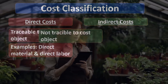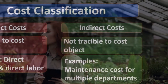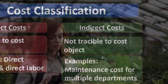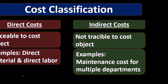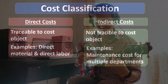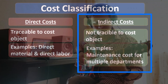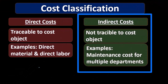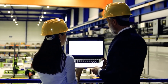On the other hand, indirect costs are things that we can't trace — they are not traceable to a cost object. Examples of that are going to be maintenance costs for multiple departments, or things like glue that we can't assign to a particular guitar. If we're making one guitar, we can't really have these indirect costs allocated specifically to that guitar. For instance, maintenance for the entire warehouse can't be applied to one particular guitar because we don't know how much to apply to it.